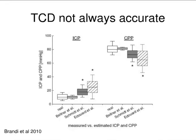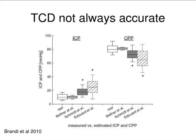Transcranial Doppler is not always accurate and there is debate about what can be done. Some papers say it's pretty good, but others say it's really not that good. We have to take this very carefully and look critically at the numbers. Here's data from our center from earlier this year showing mean intracranial pressure versus pulsatility index — and you can see there's really no correlation.